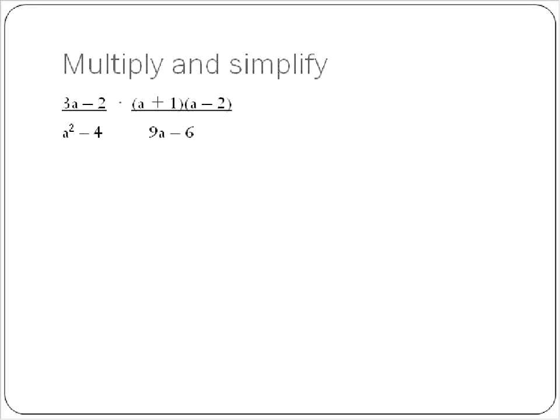Let's look at our next question here. We have (3a - 2) over (a² - 4), and we're multiplying that times (a + 1)(a - 2) over (9a - 6). The first step is that we are going to factor these into their prime factors. First off, 9a - 6—both of these terms have a common factor of 3, so we're going to factor out 3 from both of these terms.